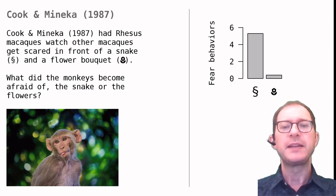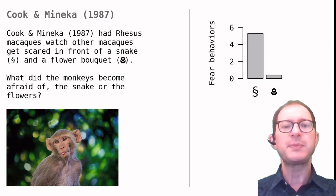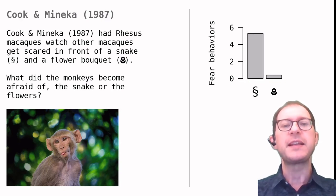This is shown in this graph, where fear behaviors refers to various things that scared monkeys do, like baring their teeth, staring at the fearsome object or trying to get away from it. As you see, there were approximately 10 times more fear behaviors in response to the snake than in response to the flowers. This is a fairly extreme case of overshadowing. It seems that the monkeys, even if they don't innately fear snakes, can learn this fear very quickly. There seems to be something that tells them that it is more appropriate to be afraid of snakes than of flowers.